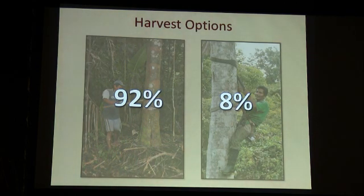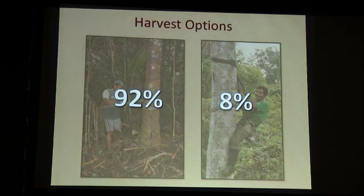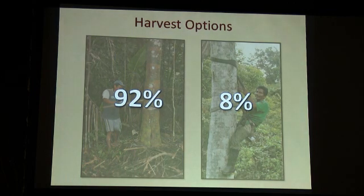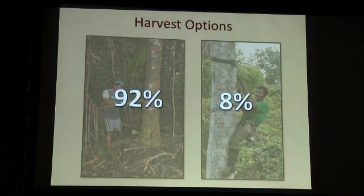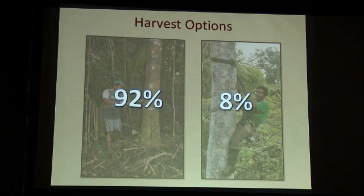When I asked harvesters from communities that cut whether they knew about climbing methods or wanted to climb, all of them told me they had heard about climbing. Some had seen other communities climbing trees, and some had even participated in climbing workshops. But they told me two very important things: one is that they did not have access to climbing materials or training. The second is that there was a very pervasive perception that cutting is much faster and much safer than climbing. When you time people on how long it takes to cut and climb the tree, it's about 10 minutes either way, but most people who cut are convinced it is much safer and faster.